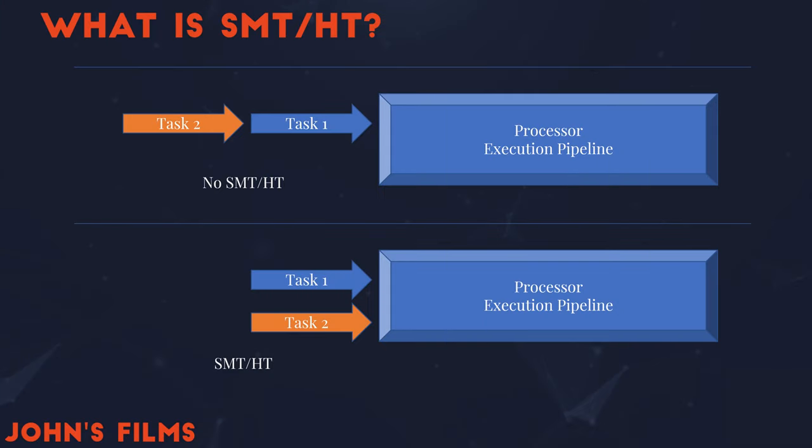I'll tell you up front: it depends on your workload as to whether or not a processor core can effectively run two threads at the same efficiency, or even close. Now, what is this SMT thing? It's called simultaneous multi-threading, and it allows you to run more than one task in a processor execution pipeline at a time. Historically, processors ran tasks sequentially, one after the other. While simultaneous multi-threading was invented in the 60s, it finally hit mainstream processors in the 2000s.